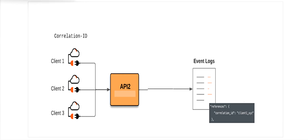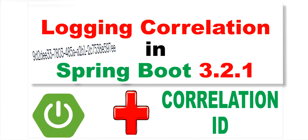With Spring Boot version 3.2.1 we don't need to do much configuration to implement correlation ID — we just need to add one dependency and enable it. Let's go through the code and see how logging behaves before version 3.2.1.